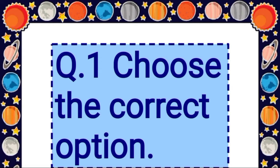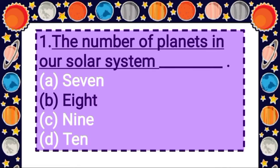Let's solve question 1: choose the correct option. First question: the number of planets in our solar system is dash. Option A: 7, Option B: 8, Option C: 9, Option D: 10. Answer is option B, 8 — the number of planets in our solar system is 8.